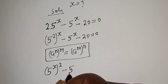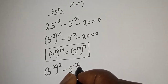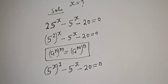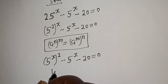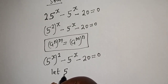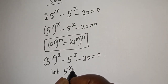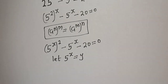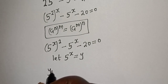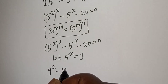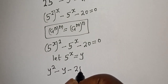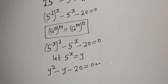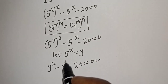So we have 5 raised to power s, squared, minus 5 raised to power s, minus 20 is equal to zero. Let 5 raised to power s equal to y. Then we get y squared minus y minus 20 is equal to zero. This is a quadratic equation. Let's solve this using the factorization method.